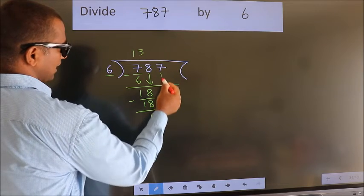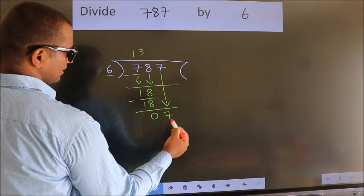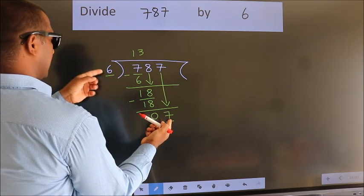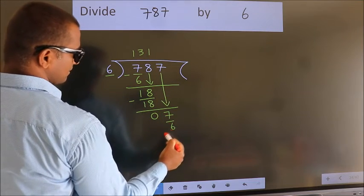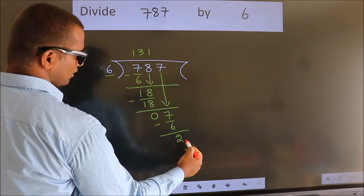After this, bring down the beside number. So, 7 down. So, 7. A number close to 7 in 6 table is 6 times 1. Now, we subtract. We get 2.